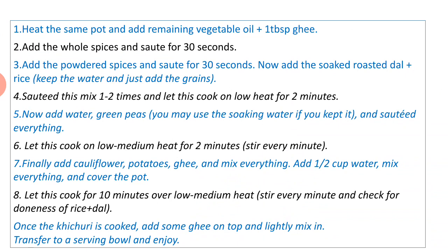Now add water and green peas — you may use the soaking water if you kept it — and stir everything. Let this cook on low-medium heat for two minutes, stirring every minute. Finally, add cauliflower and potatoes, mix everything, add half cup of water, cover the pot, and let cook for ten minutes over low-medium heat, stirring every minute. Once cooked, add some ghee on top, lightly mix, and transfer to a serving bowl. Enjoy!